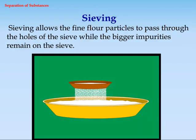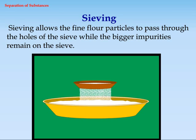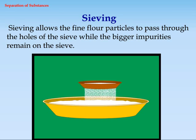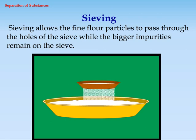Sieving. Sieving allows the fine flour particles to pass through the holes of the sieve, while the bigger impurities remain on the sieve.